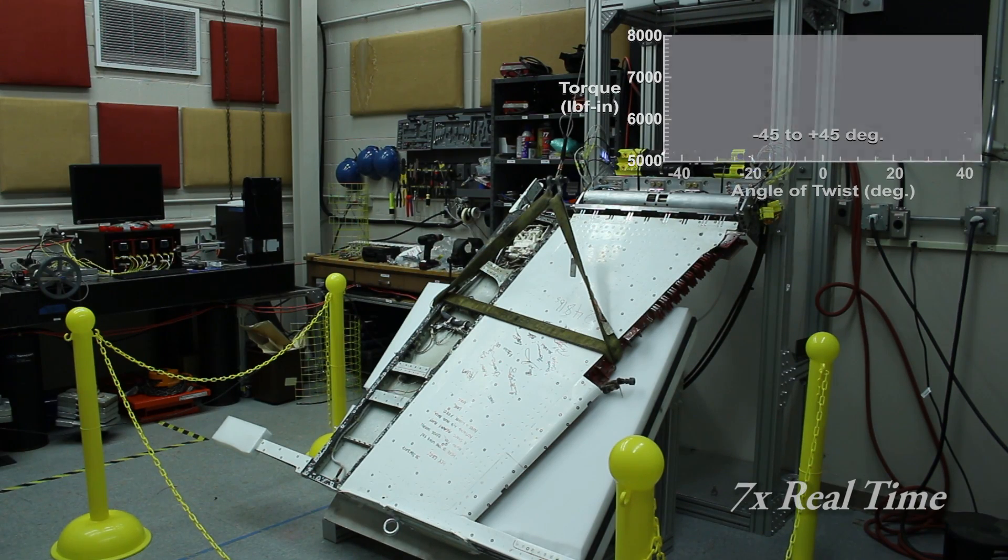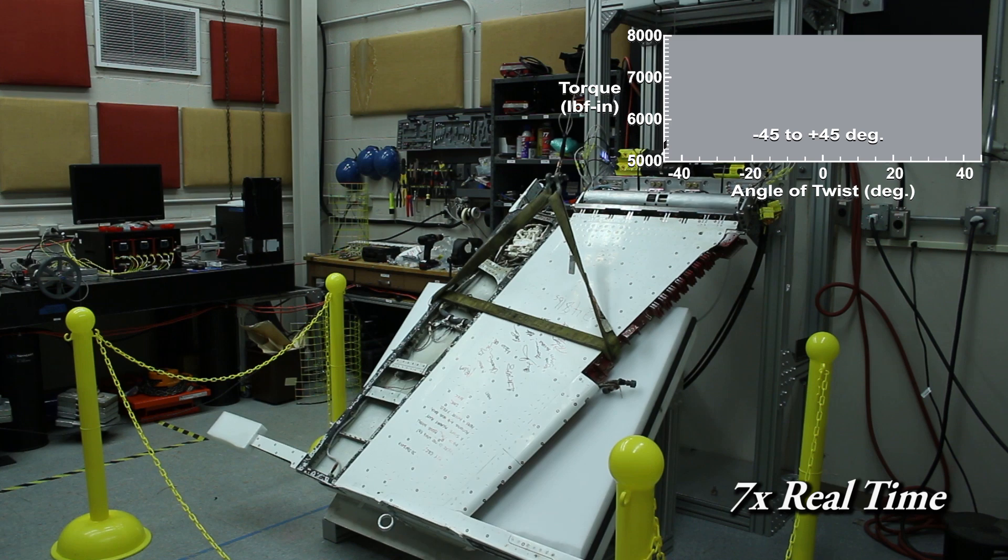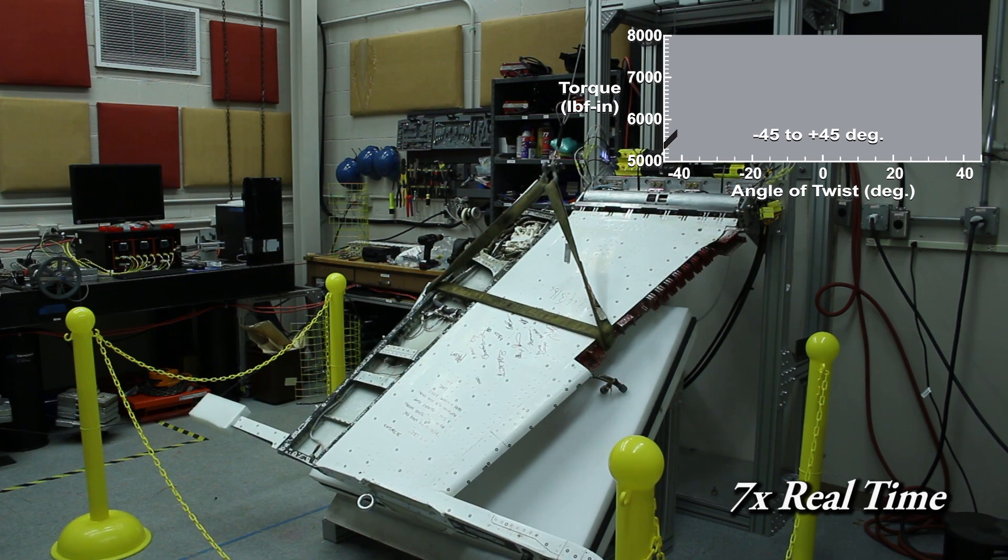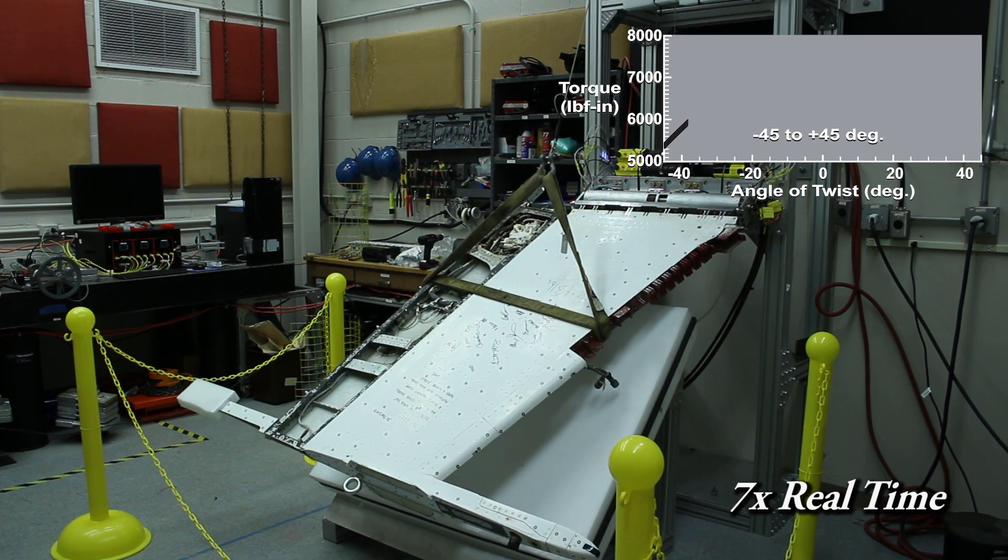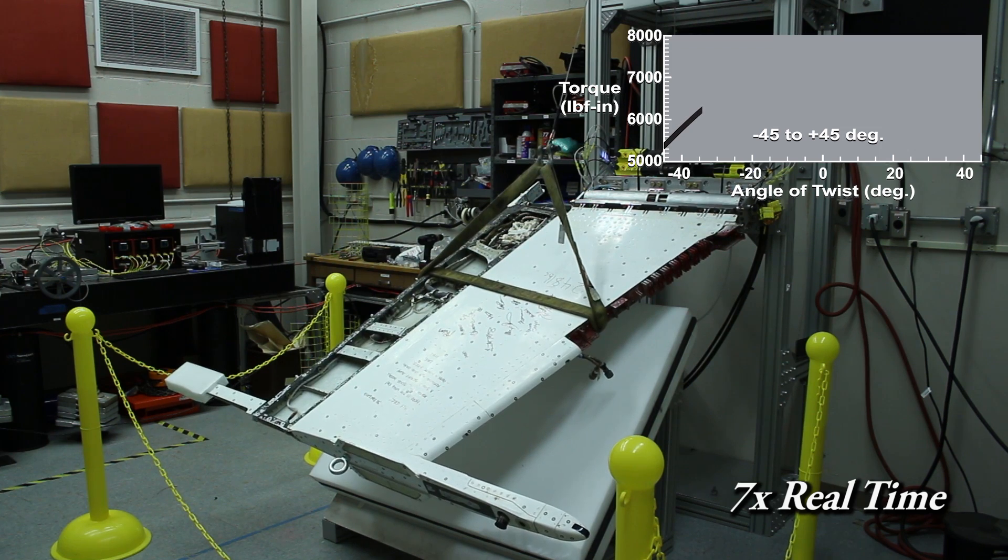This next test condition is from minus 45 to 45 degrees. Since our project is not just about folding on the ground but also in flight, we need to evaluate how folding the wing down looks like.